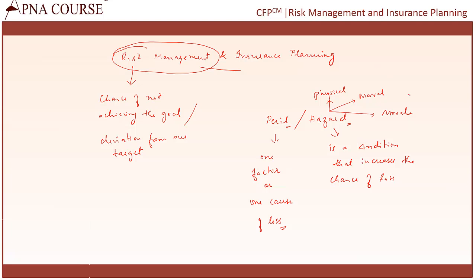Moral hazard is more to do with a person's characteristics. For example, if somebody is dishonest in his dealings, not being objective while talking — somebody being dishonest is a moral hazard. Because of his dishonesty, it leads to loss to him, people around him, or the company. That is a moral hazard.